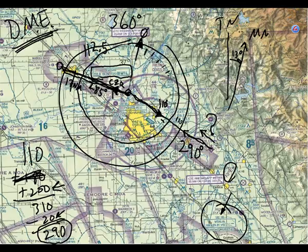You'd say: 'Rancho Murrieta Radio, Tomahawk 3435 Juliet transmitting on 122.1 and receiving on 109.4.' There's somebody sitting at a radio twiddling their thumbs, eating a turkey sandwich and a pickle — just waiting for somebody to call them up.